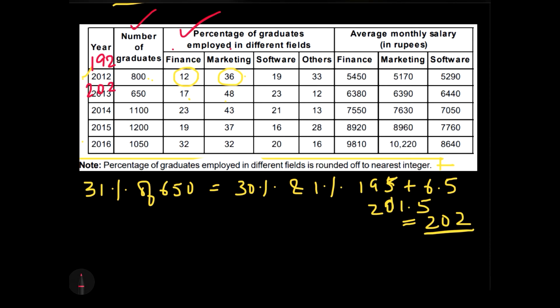For 2014, the calculation is 43 minus 23, which is 20%. And 20% of 1100 is 110 times 2, that is 220.